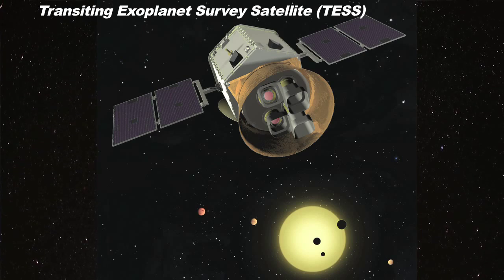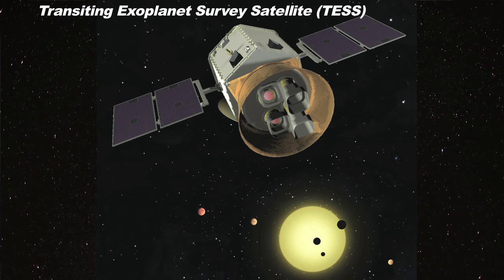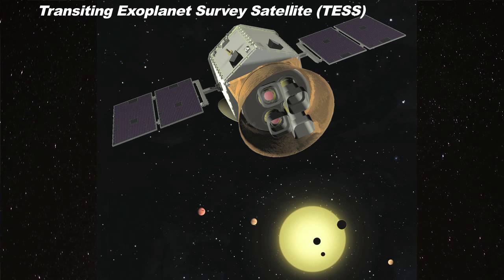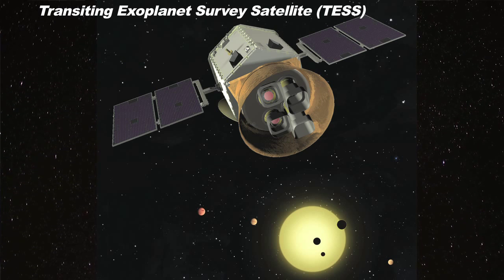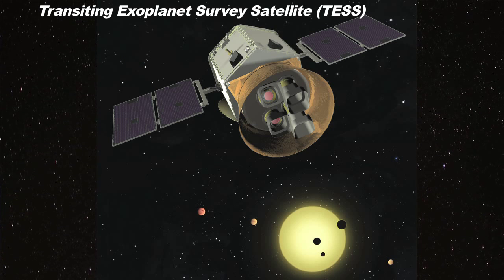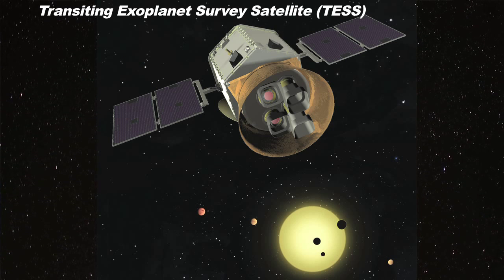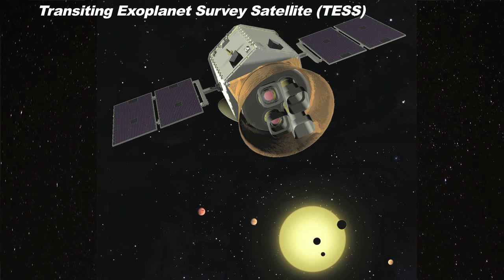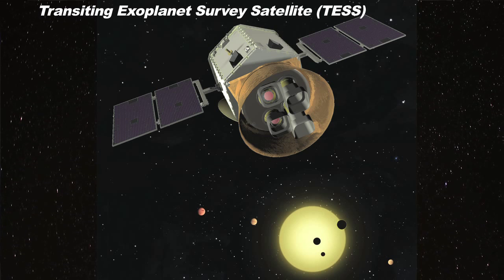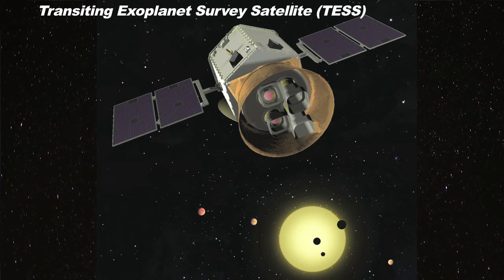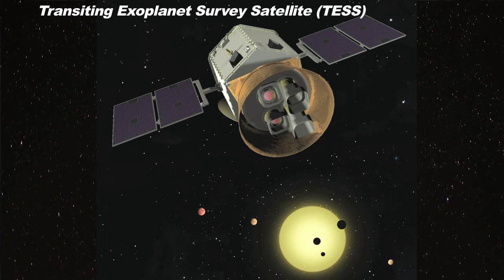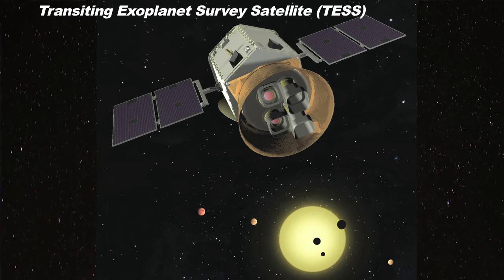I'm currently the project manager for the Transiting Exoplanet Survey Satellite, TESS. We were just awarded and just started Phase B. Our mission is going to go into Earth orbit in 2017, and our goal is to look for exoplanets around other stars — a follow-on, more or less, to what Kepler has been doing recently.